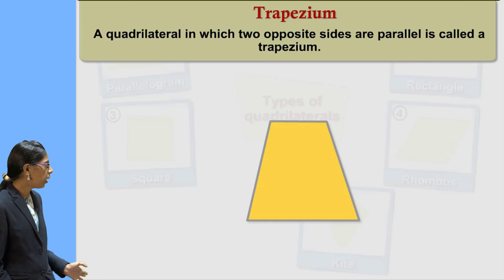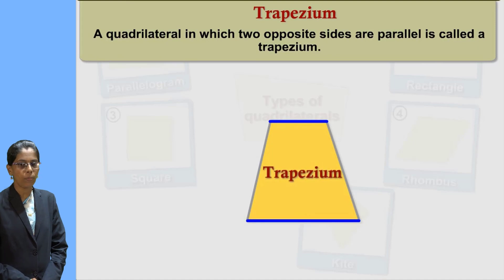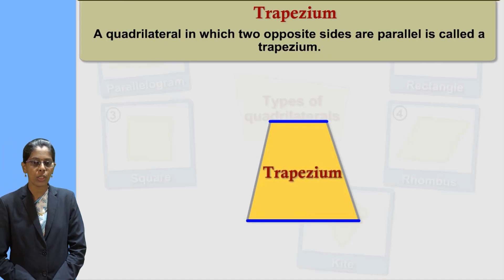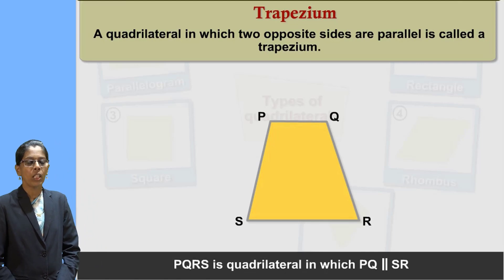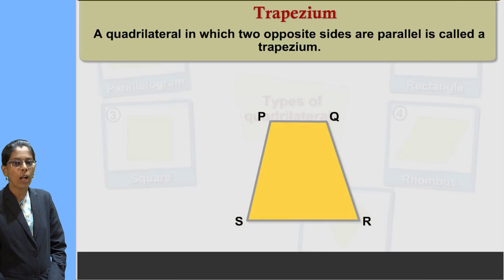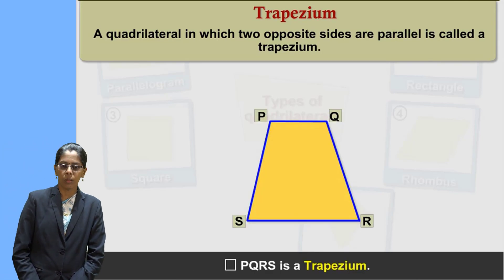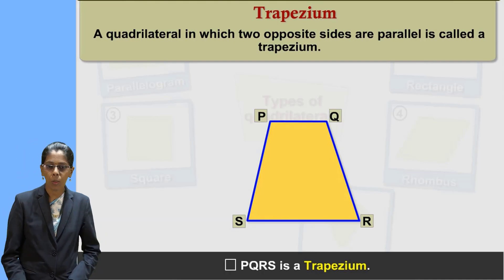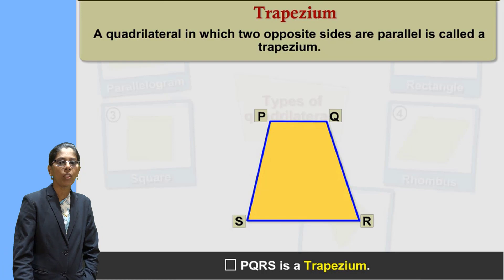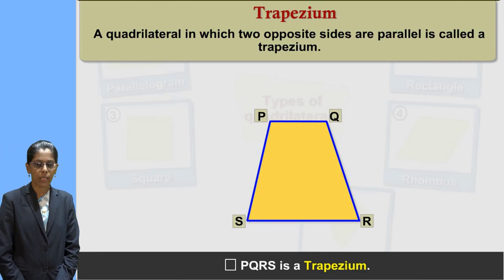Let us see the next point: trapezium. This is a type of quadrilateral. A quadrilateral in which two opposite sides are parallel is called a trapezium. In the figure, PQRS is a trapezium because PQ is parallel to SR. The property of a trapezium is that only one pair of opposite sides is parallel.